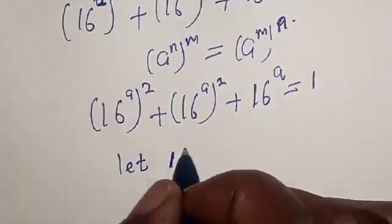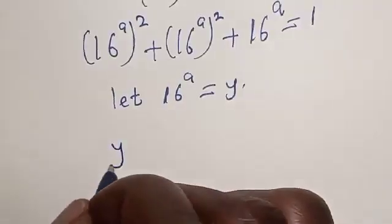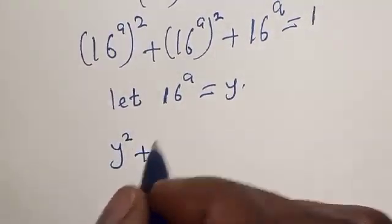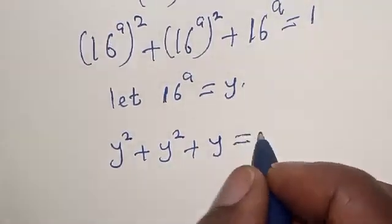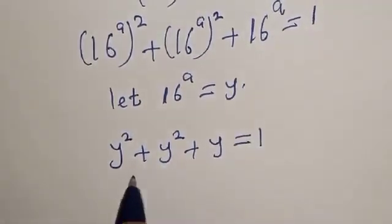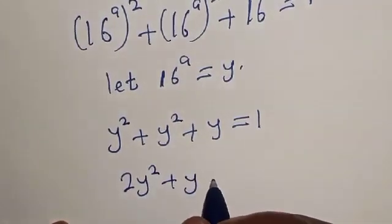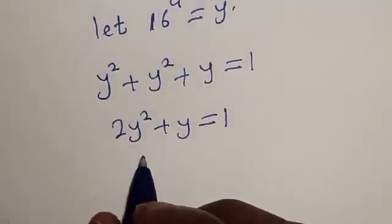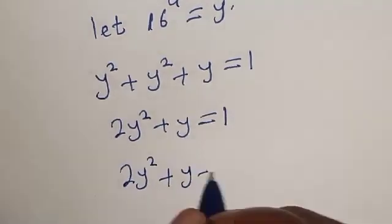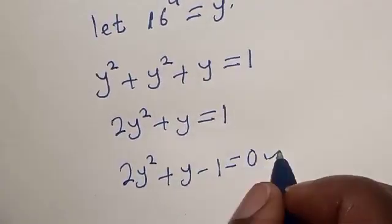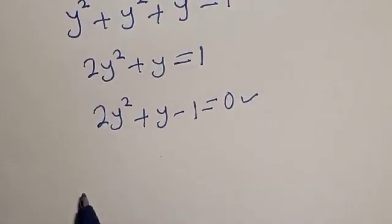Let 16 raised to the power a equal y. Then y squared plus y squared plus y is equal to 1. This simplifies to 2y squared plus y is equal to 1. Now, 2y squared plus y minus 1 is equal to 0. This is a quadratic equation. Let's solve using factoring.